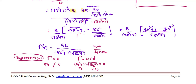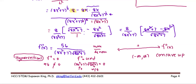Then we consider the whole real number line. Any number you pick and plug into the second derivative will always be positive. Therefore, the interval that the function is concave upward is negative infinity to infinity. And since we do not have a hypercritical value, therefore we do not have a point of inflection.